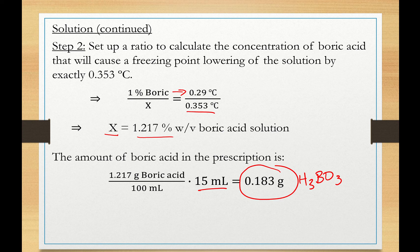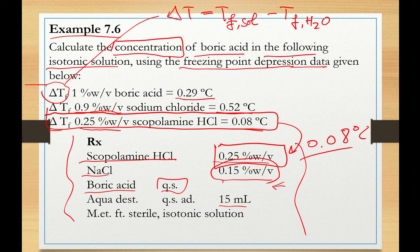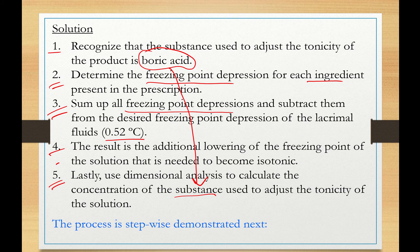You could have solved this problem using the E-value, but the purpose here is to use freezing point depression to calculate the amount of boric acid needed to make this ophthalmic solution isotonic. One important note: the delta Tf data — for 1% boric acid, 0.9% sodium chloride, and 0.25% scopolamine hydrochloride — are experimentally measured, not theoretical values. This is an advantage of the freezing point depression method, as these values are highly accurate.